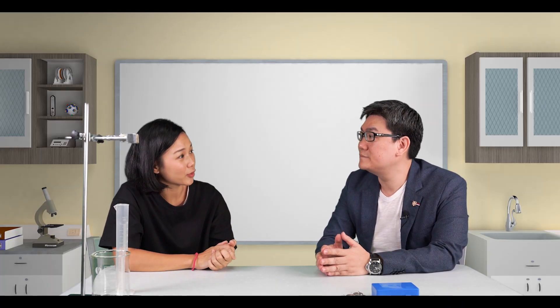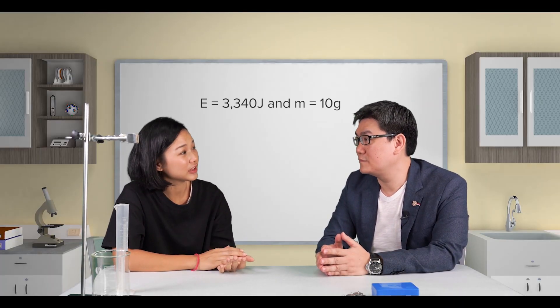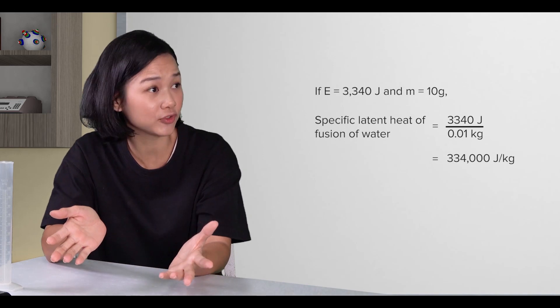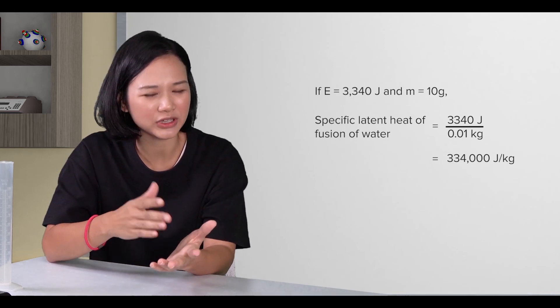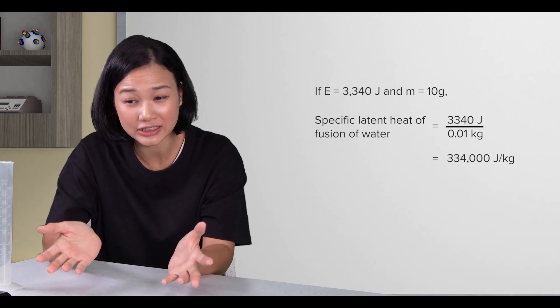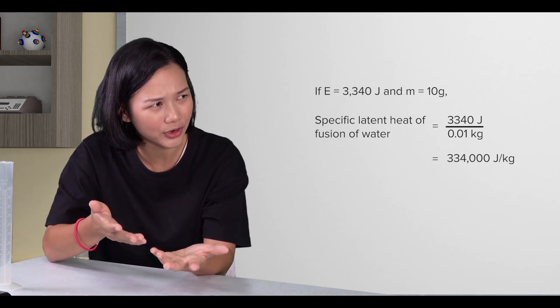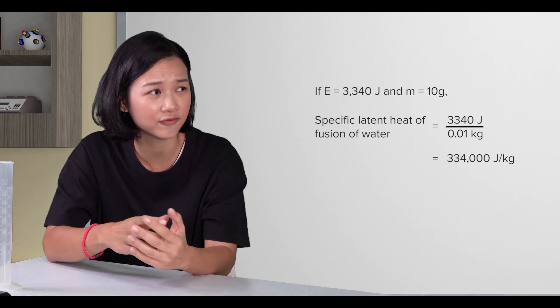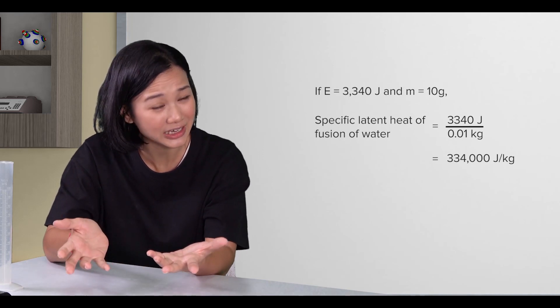So if the experiment reports that E equals to 3340 joules and M equals to 10 grams, then the specific latent heat of fusion of water would be 3340 divided by 0.01 equals to 334,000 joules per kg.